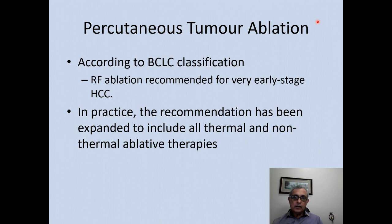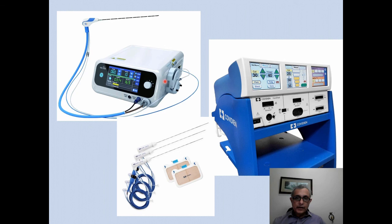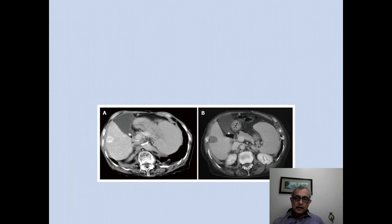Here is an example of a microwave generator with the cable and needle inserted into the patient. Cooling keeps the shaft cool to minimize risk of skin burns. The RF system requires grounding pads to complete the circuit, with needles available in different dimensions of length and diameter. Here is an example of a patient who had a tumor in the right lobe successfully treated with RFA.